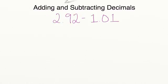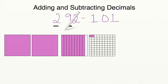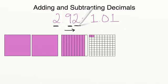We are going to begin by subtracting 2 and 92 hundredths minus 1 and 1 hundredth. First, we're going to look at a diagram of 2 and 92 hundredths so that we can see what decimals look like using an area model. Here we have two wholes, which makes sense because we have a 2 in the ones place. We have a 9 in the tenths place, which is to the right of the decimal, and a 2 in our hundredths place, represented by these two hundredths.